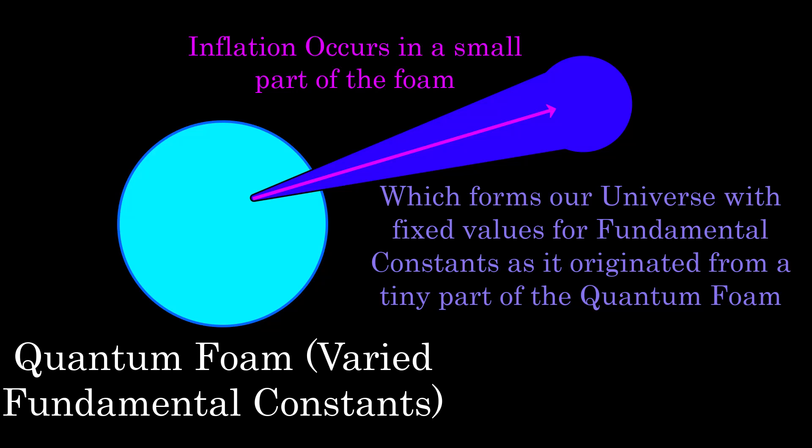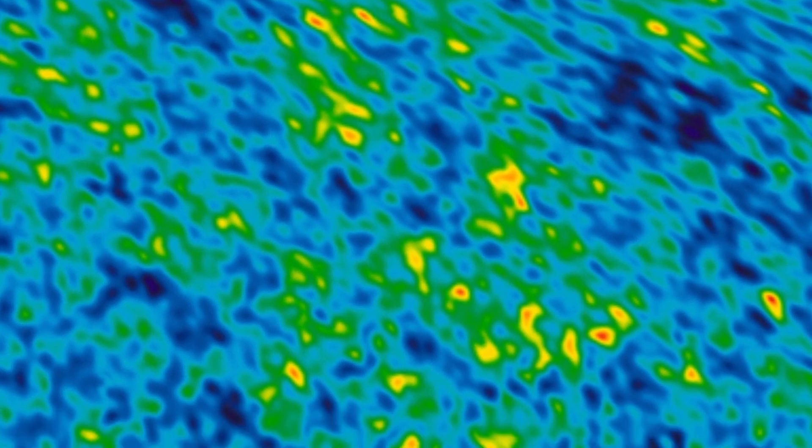The rest of the quantum foam could have also undergone separate expansion at different times, which would result in different universes forming as well. Each of these would have different values for the fundamental constants, and we would never be able to interact with them. Back to looking at just the part of the foam which expanded to form our universe though. Due to the quantum fluctuations, the density of the universe would not be constant, and it would in fact vary on different scales.